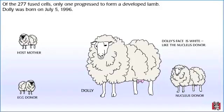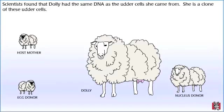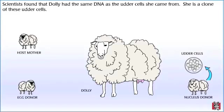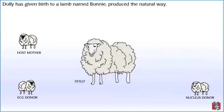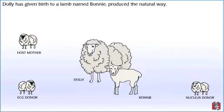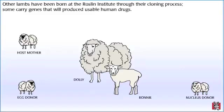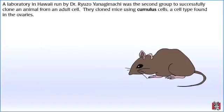Dolly was born on July 5, 1996. Scientists found that Dolly had the same DNA as the udder cells she came from — she is a clone of these udder cells. Dolly has given birth to a lamb named Bonnie, produced the natural way. Other lambs have been born at the Roslin Institute through their cloning process, and some carry genes that will produce usable human drugs.